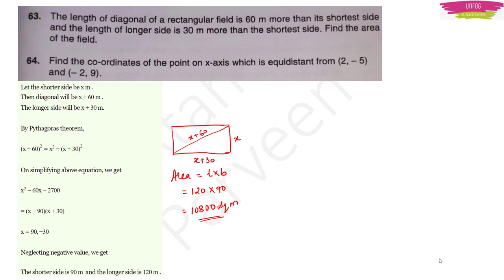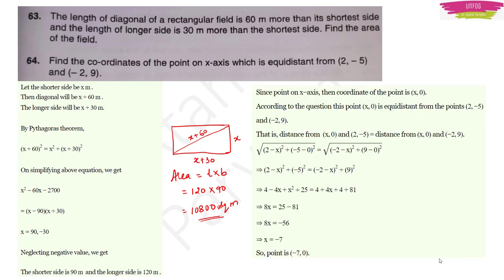Question 64: Find the coordinates of the point on the x-axis equidistant from (2, −5) and (−2, 9). Using the distance formula and equating the two distances, x = −7. Since the point is on the x-axis, y = 0. The answer is (−7, 0).